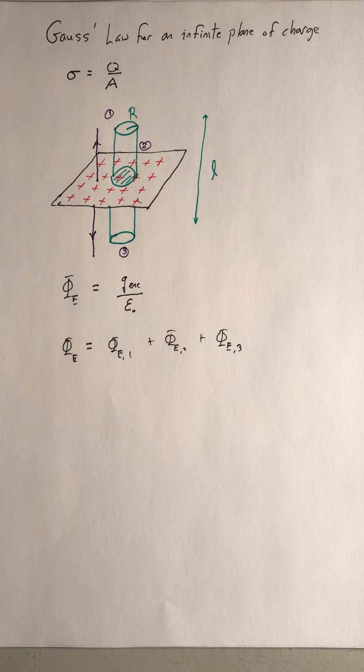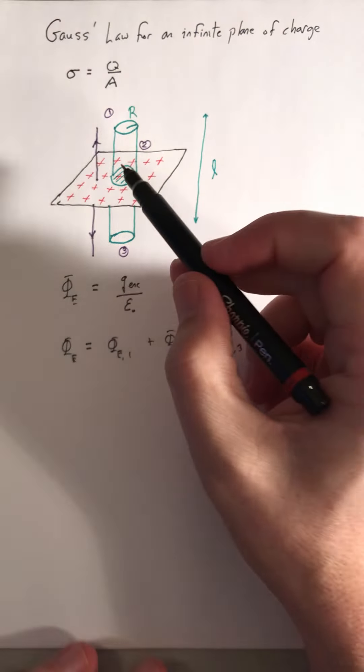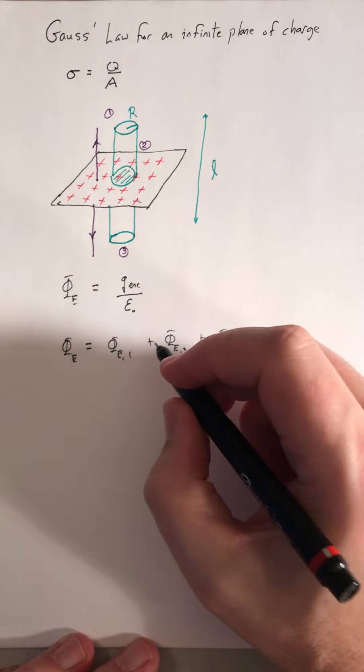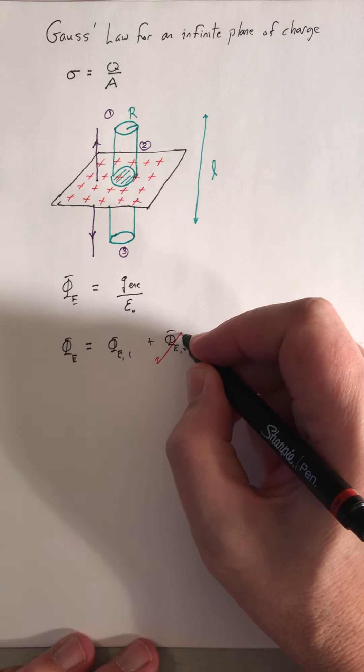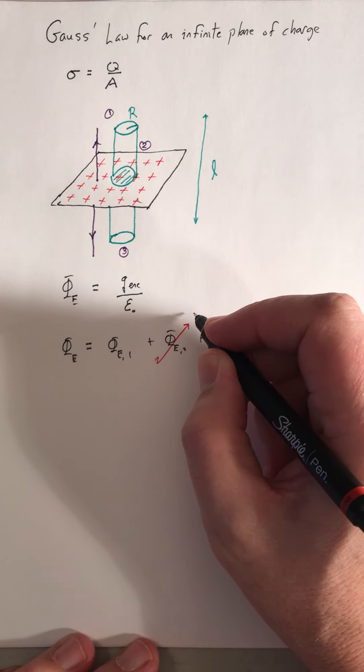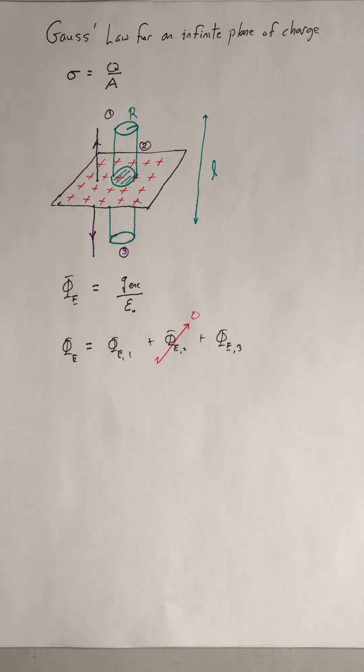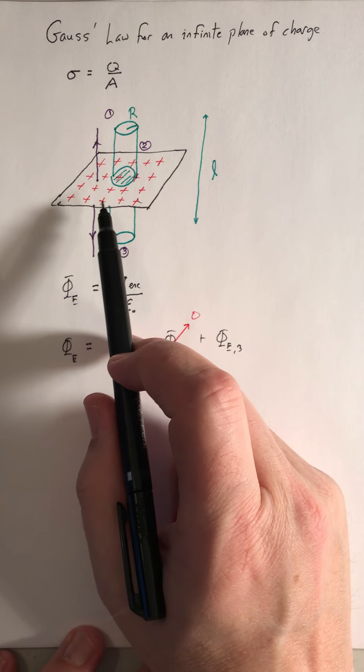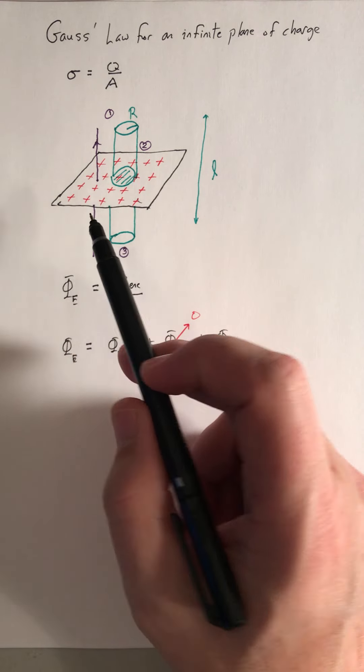So with that, there can't be any flux through surface two, the side of the Gaussian surface. Because there, the electric field lines are going to be parallel to the surface, so none can pass into my Gaussian surface or out.